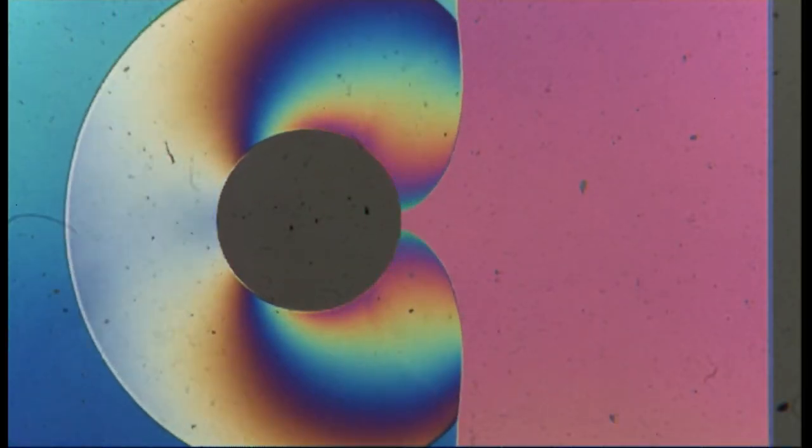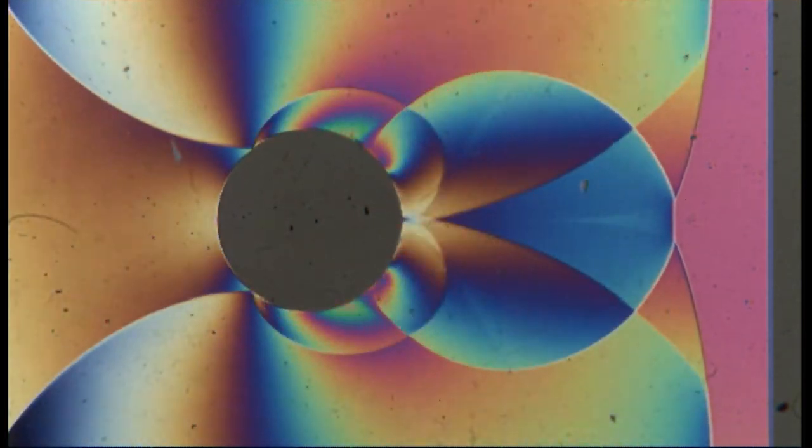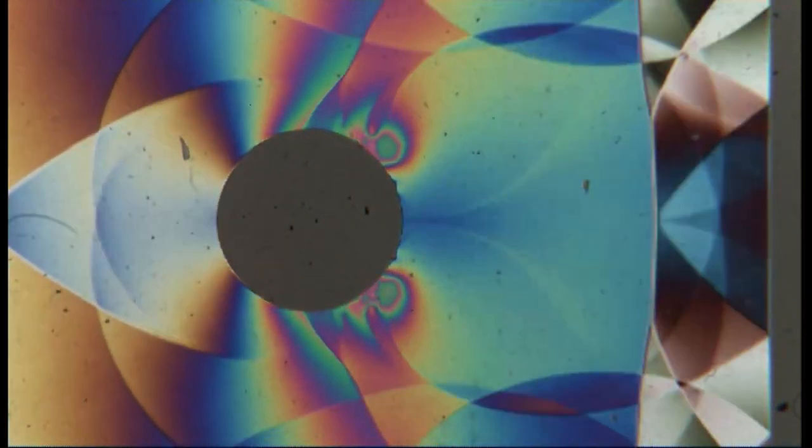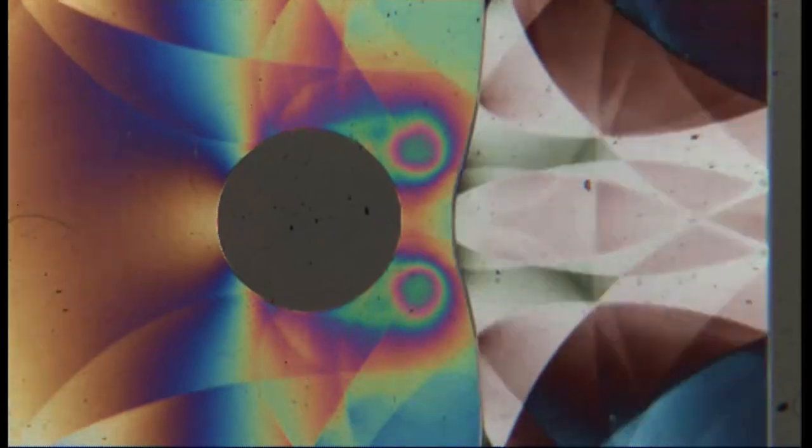In a different application we can also make visible the loading that a structure would be exposed to when it is hit by a blast wave. So we have here from the left a shock wave that passes over a pillar. The pillar is located in front of a wall, so the shock wave will first negotiate the pillar and then be reflected from the wall.